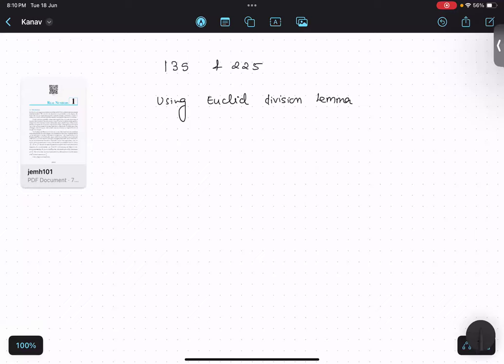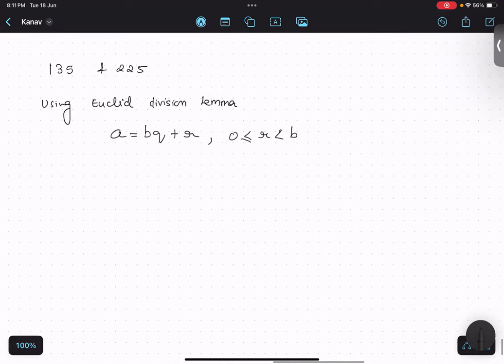Okay, so I call it a equals to bq plus r formula, bq plus r, okay? Where r should be greater than equal to zero and should be smaller than b. So what does this mean?